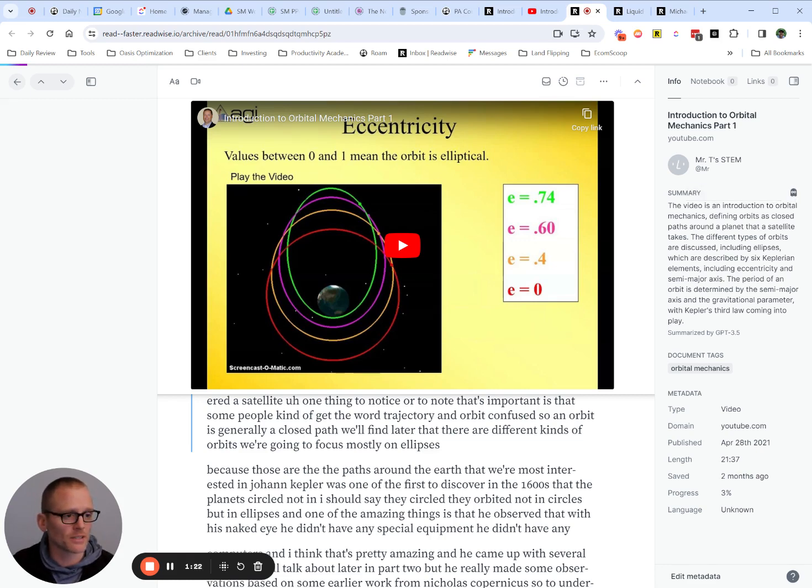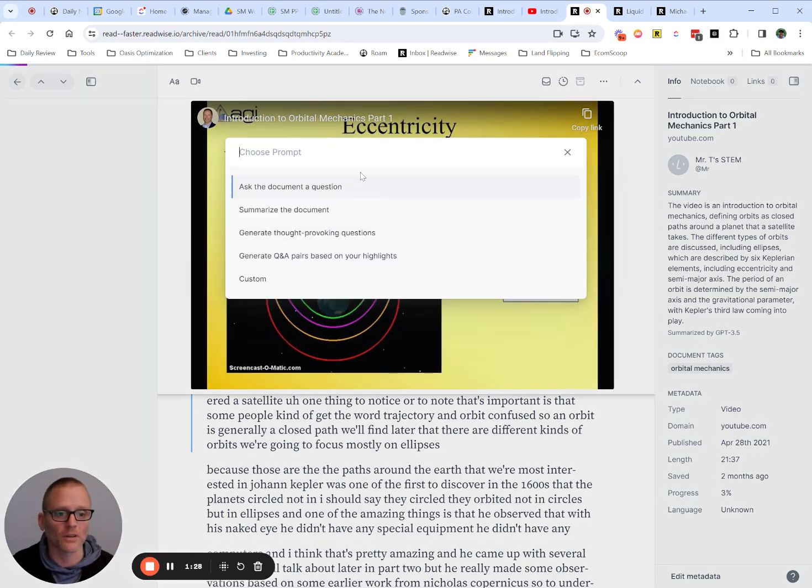And if this, for whatever reason, isn't working, you can hit Shift-K, I believe, or Shift-G. I get that wrong all the time. Control-G brings up all of your options. And you can then summarize the document. That's the easiest way. If that's what you want to do, you can certainly do that.